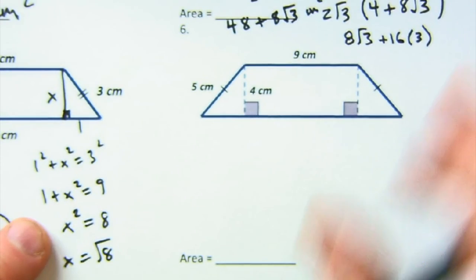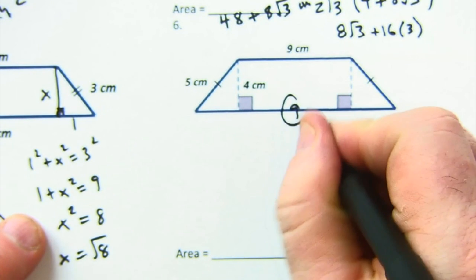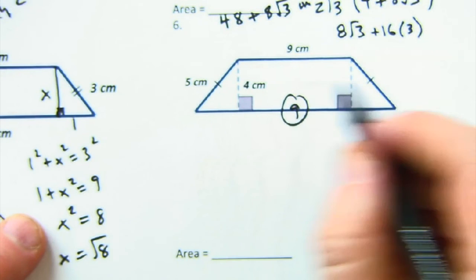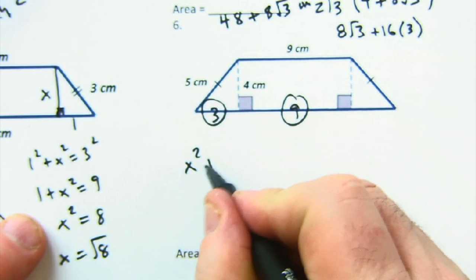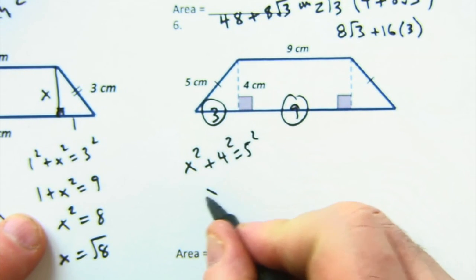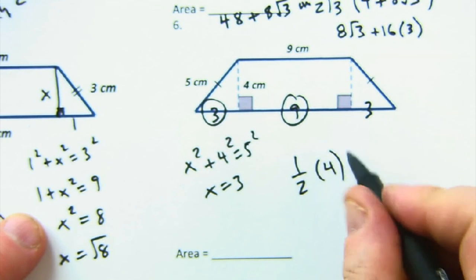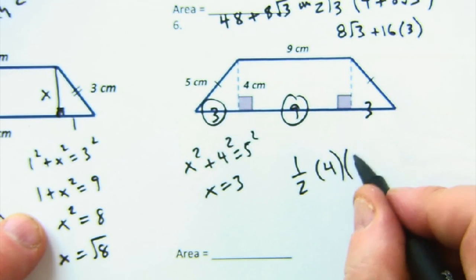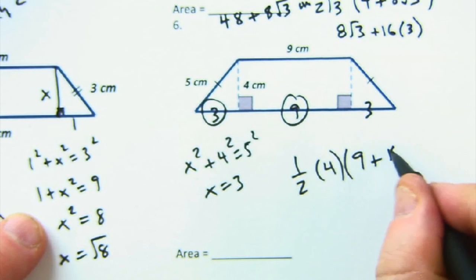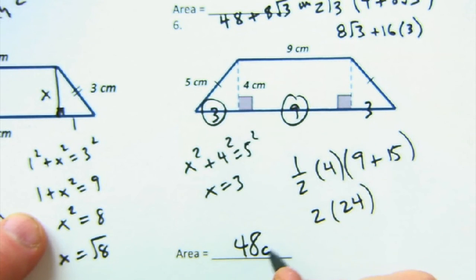For the final example, there's a 9 given, so the other matching piece is also 9. I spot a 3-4-5 Pythagorean triple: x² + 4² = 5², so x = 3. Now I have the formula: one half times height 3 times bases 9 and 15. That gives one half times 3 times 24 = 2 times 24 = 48 cm². Lots of fun — good luck!